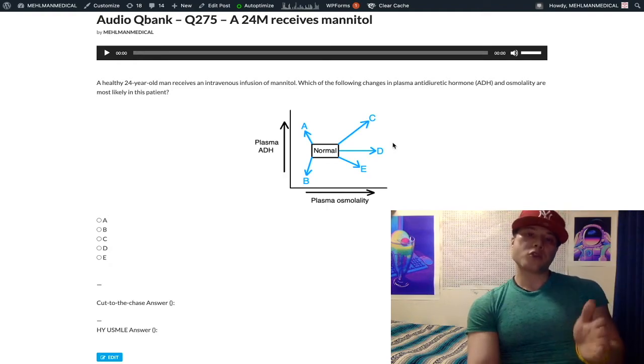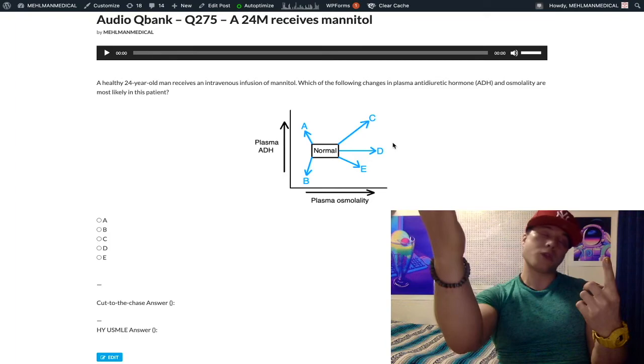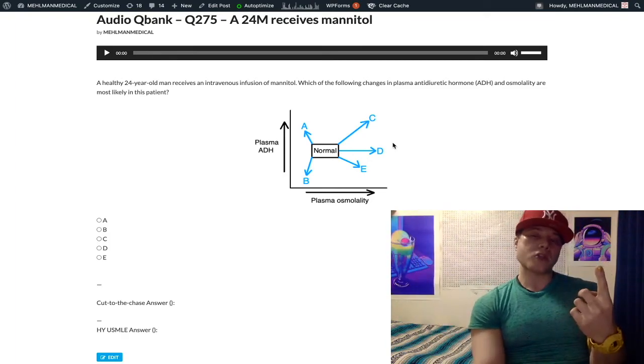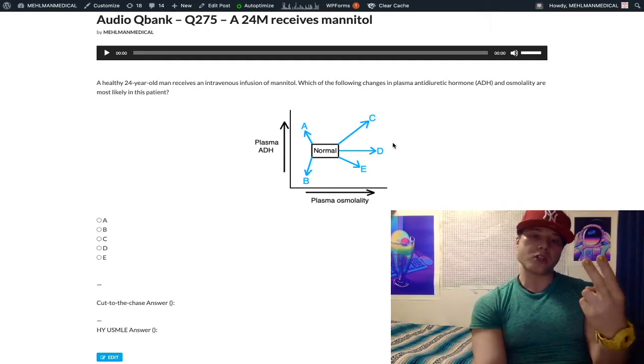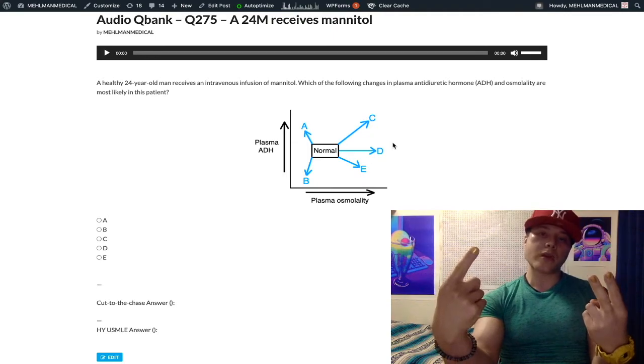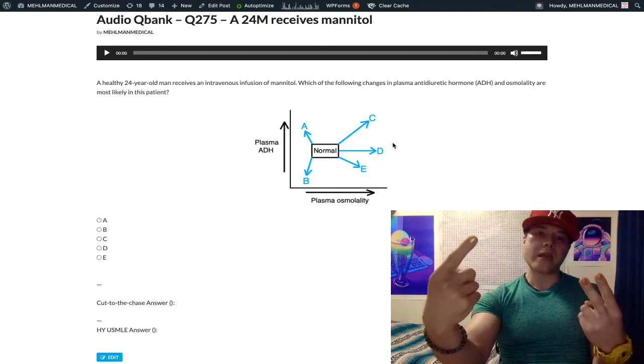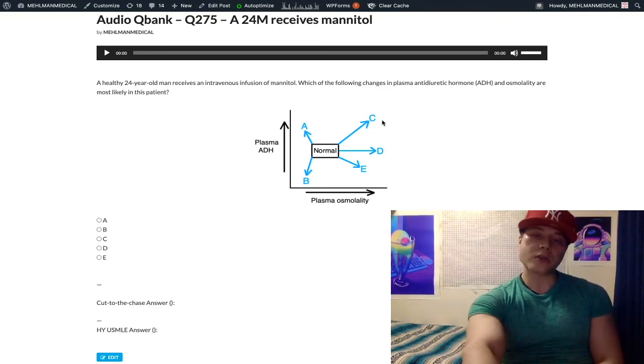So we have two counter arguments. One, we just said acutely mannitol can cause hyponatremia from drawing free water from the interstitium and intracranial compartment into the blood. And two, increasing plasma volume. So these are counter arguments against the secretion of ADH. We could make the contention that ADH should decrease, but then we have the strong salient point that mannitol is increasing osmolality and this wins - this effect eclipses the other two. So that's our answer choice C.